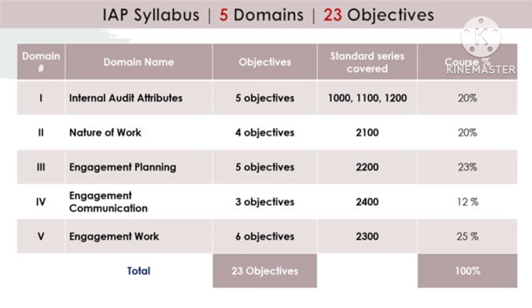Domain 3 has five objectives and the 2200 series of standards. Domain 4 is Engagement Communication — three objectives, 2400 series of standards. And the fifth is Engagement Work, having six objectives and the 2300 standard series, covering overall 25% of the course. There are 23 objectives in total across the five domains.